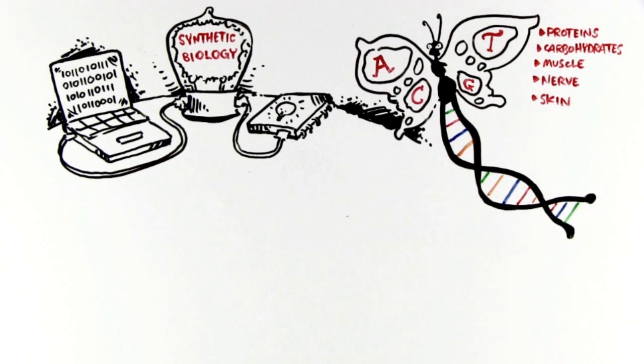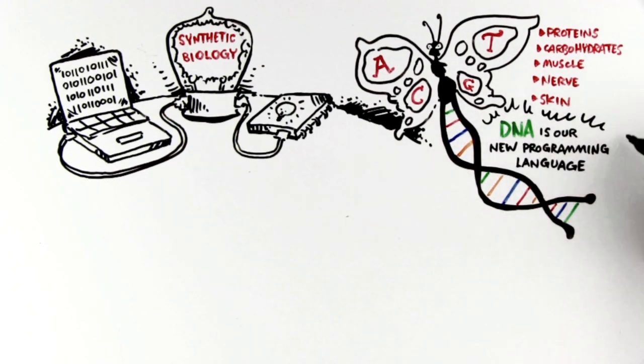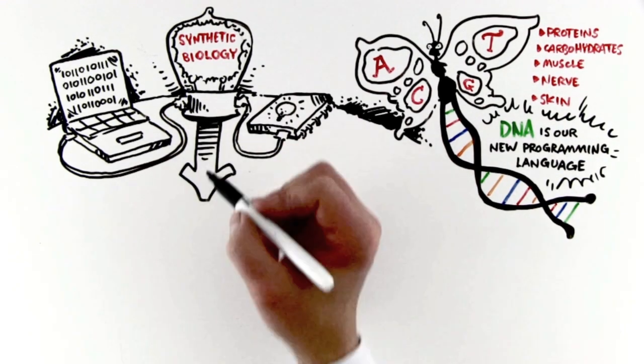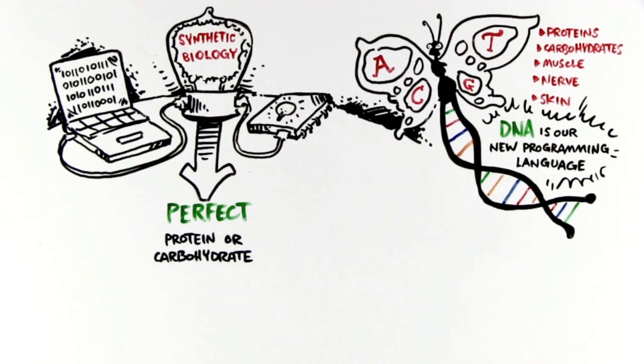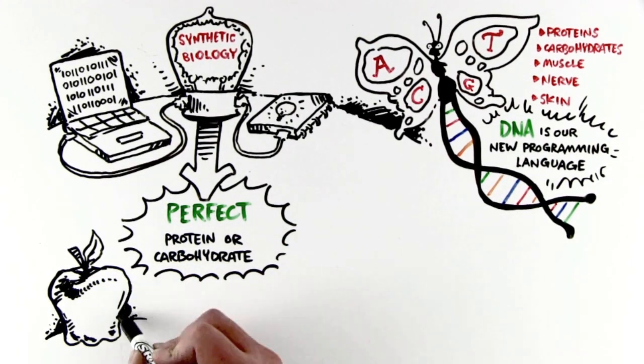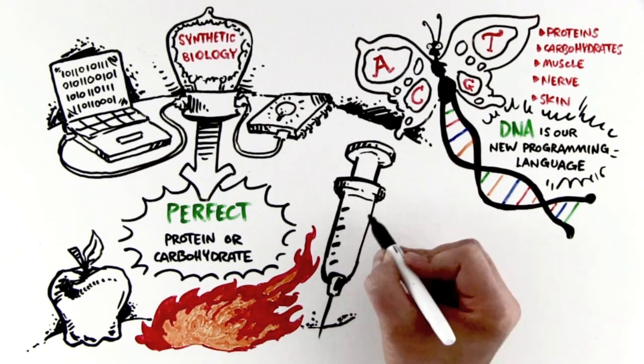Today, with the advent of synthetic biology, DNA has become our new programming language. Using infinite computing and AI, we can design a sequence of DNA that will direct a cell to manufacture the perfect protein or carbohydrate to be used for foods, fuel, or vaccines, far more tailored and efficient than ever before.